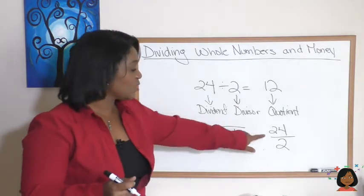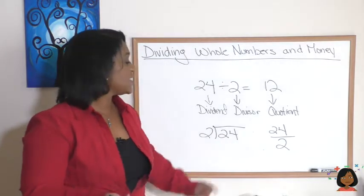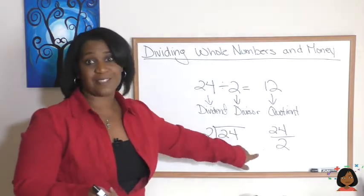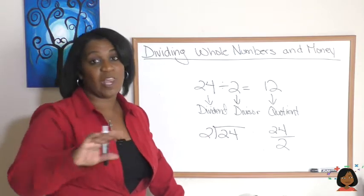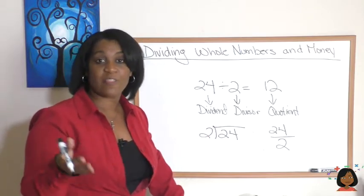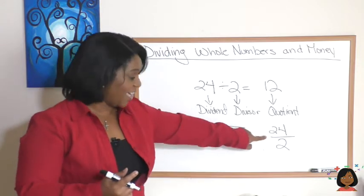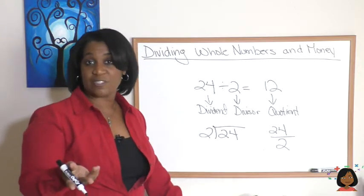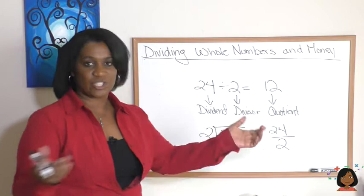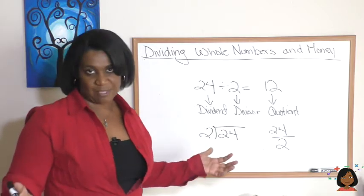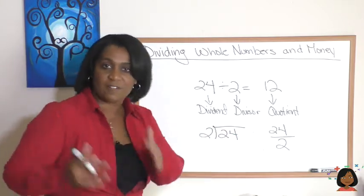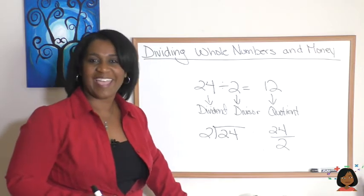All we're saying is when you see this bar that you normally think of as a fraction, say 24 divided by 2. That will help you go a long way in math. If you can remember that every fraction is a division problem, 24 divided by 2. And which one is our dividend? It's the 24 just hanging out there waiting to be chopped up. And the 2 is doing all of the dividing on the bottom.